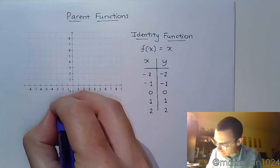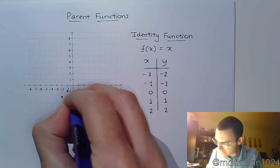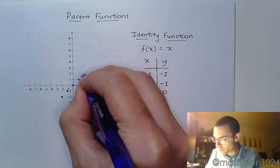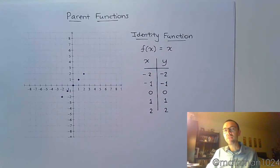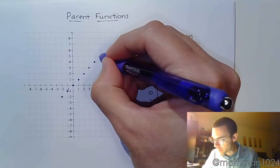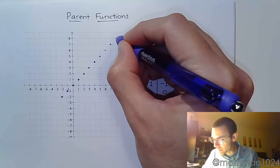So, when we plot these points, negative 2 negative 2, negative 1 negative 1, 0 0, 1 1, 2 2. If you kept on going, 3 would give you 3, 4 gives you 4, and so on. So, we can just build this guy.